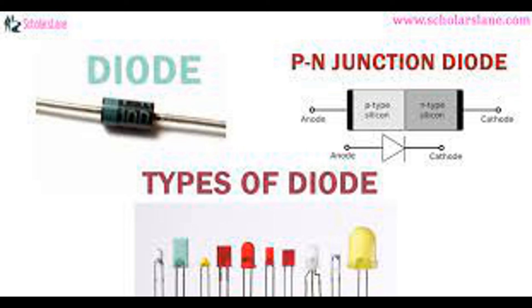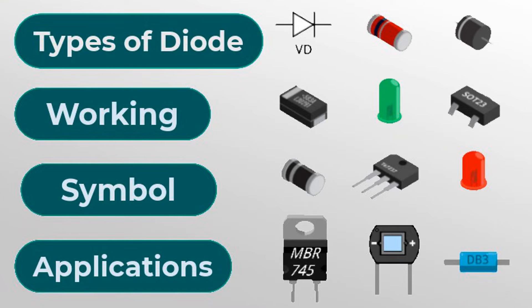Classification based on scale of integration: SSI (small-scale integration) — few gates or flip-flops per chip; MSI (medium-scale integration) — hundreds of gates or flip-flops per chip; LSI (large-scale integration) — thousands of gates or flip-flops per chip; VLSI (very large-scale integration) — millions of gates or flip-flops per chip; ULSI (ultra-large-scale integration) — billions of gates or flip-flops per chip. IC packages: ICs are housed in various packages such as dual inline package (DIP), surface mount device (SMD), chip-on-board (COB), and ball grid array (BGA).